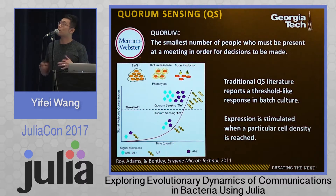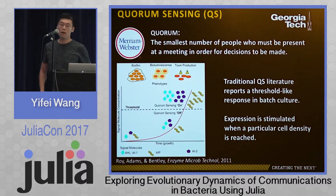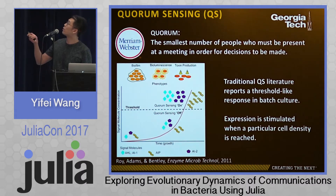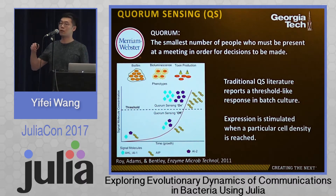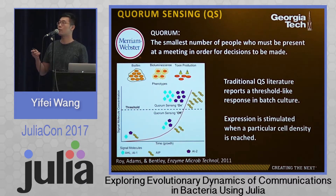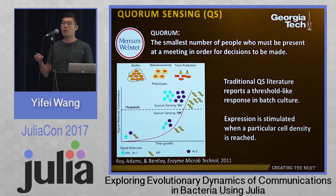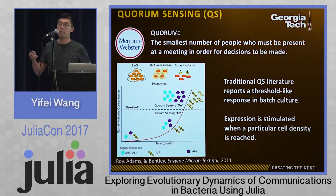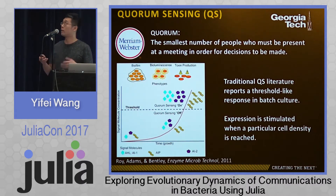What is quorum sensing? Quorum sensing is a phenomenon by which bacteria can communicate with one another. This can be achieved through the production of small molecules, as you can see here. These molecules can freely diffuse across cell membranes, and they can also be detected by other individuals in the population. Once a threshold limit is reached, this may cause a change in gene expression. In this way, the population of bacteria can coordinate their activities in a collective way.